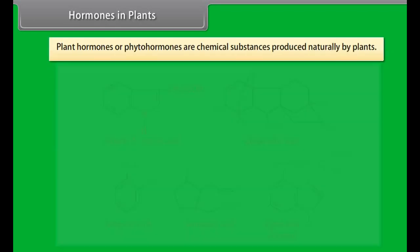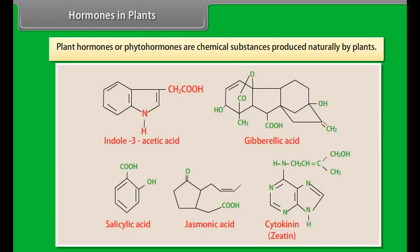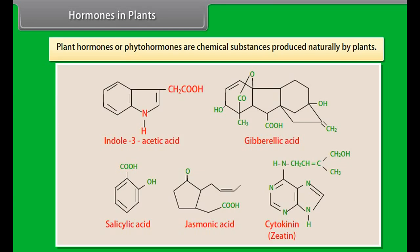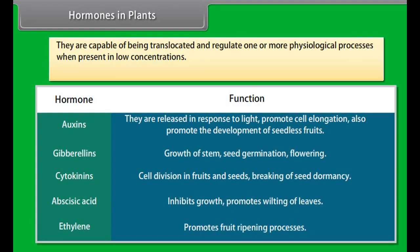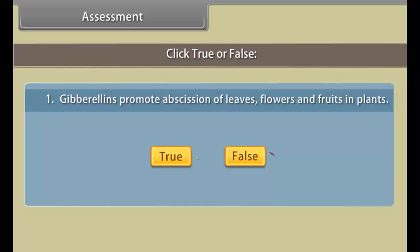Plant hormones or phytohormones are chemical substances produced naturally by plants. They are capable of being translocated and regulate one or more physiological processes when present in low concentrations. Plant hormones and their functions are as given in table.